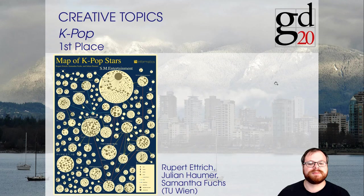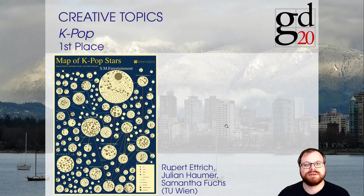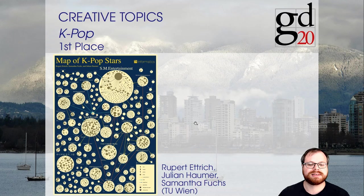In first place is a submission by Robert Ettrich, Julian Haumer, and Samantha Fuchs from TU Vienna. This is a static submission, but with a single view you can already see a lot: big circles for the labels, inside them circles for the groups, and icons for the actants. You immediately see which are the largest labels, how they are interconnected, and it gives a very nice overview of this huge field of K-pop stars. Thank you all for your great submissions and congratulations to the winners.